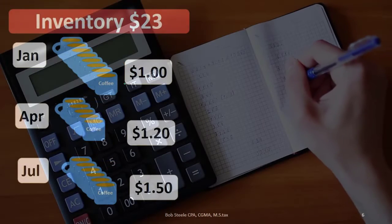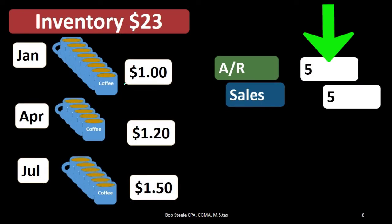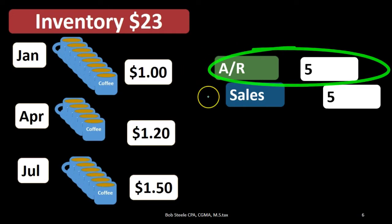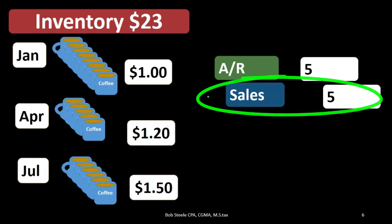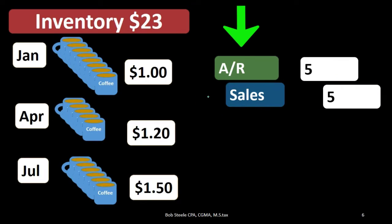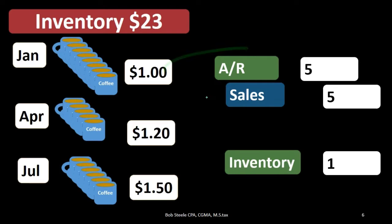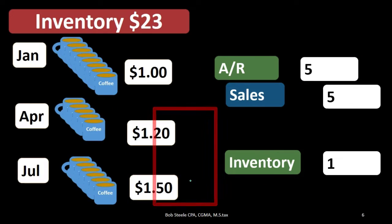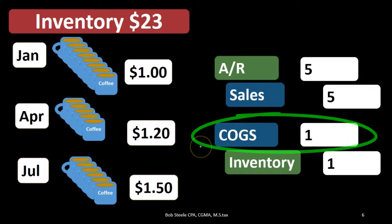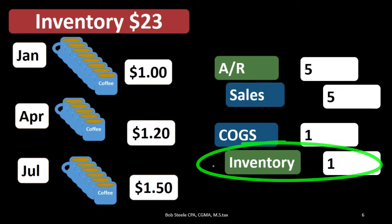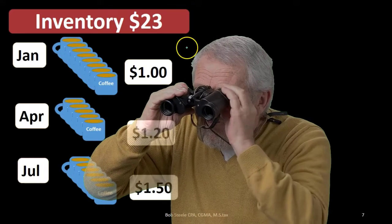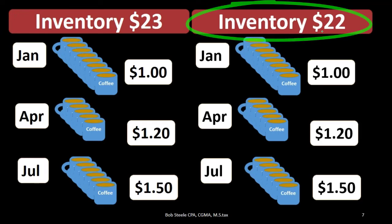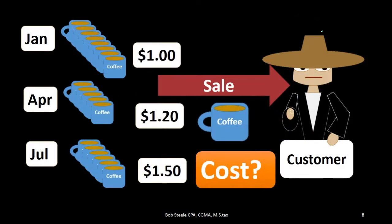It's important to note that this is just an assumption — we're not talking about the actual physical flow of coffee mugs. If we make that FIFO estimate, the sales price is five dollars. We record accounts receivable up five dollars, sales up five dollars — the sales price has nothing to do with the cost method. The inventory goes down by one dollar and cost of goods sold goes up by one dollar. That leaves us with ending inventory of $22.